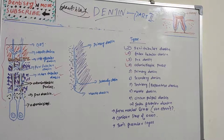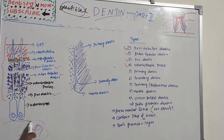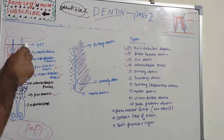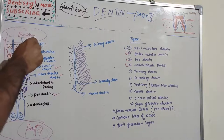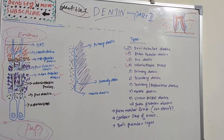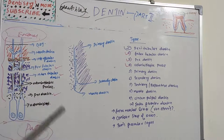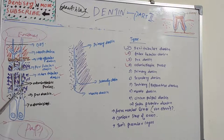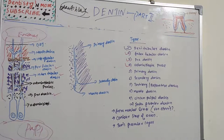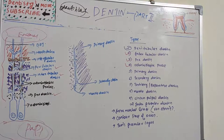The odontoblast is between the pulp and the pre-dentine border, with enamel on the outer side. The processes are largest in diameter near the pulp and become thinner as they move toward the outer dentine. The cell bodies are 7 micrometers in diameter and 40 micrometers in length. That covers the odontoblastic process.